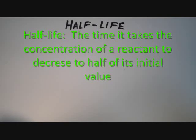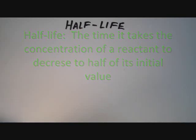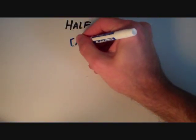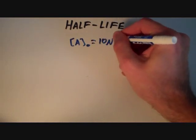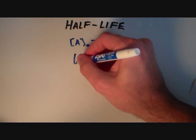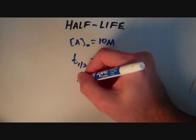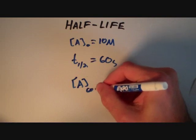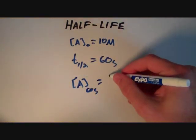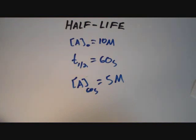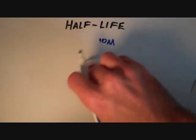So here we are going to talk about half-life. Half-life is defined as the time it takes the concentration of a reactant to decrease to half of its initial value. For instance, if I have an initial concentration of 10 molar and a half-life T½ of 60 seconds, then the concentration of A after 60 seconds is going to be one-half of 10 molar, or 5 molar. That is just a basic summary of how half-life works.